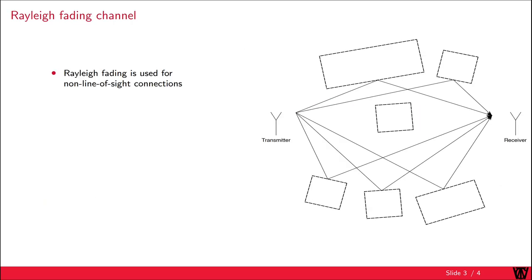But what is fading exactly? Fading means that we have large variations in channel quality. There are many different models for fading, such as Rayleigh, Rician, and two-wave with diffuse power fading.